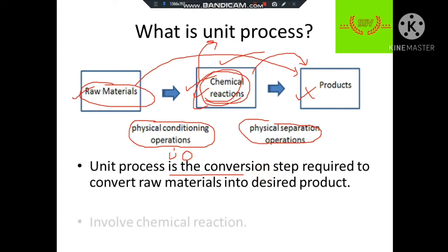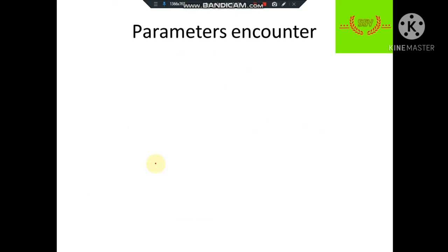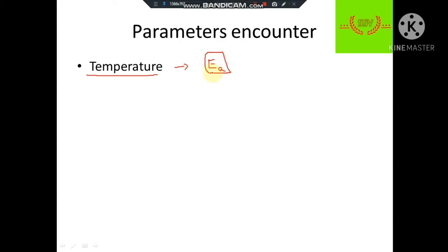That is known as a unit process. The main distinction is that unit processes involve chemical reactions, while unit operations don't. Now, the main features that every chemical engineer encounters in unit processes: first is temperature. We all know that chemical reaction is influenced by temperature, which we will discuss in upcoming videos. You should know what parameters are required for analyzing any unit process in chemical engineering.